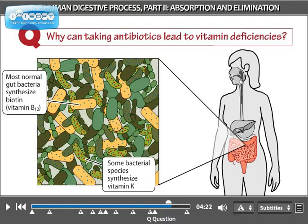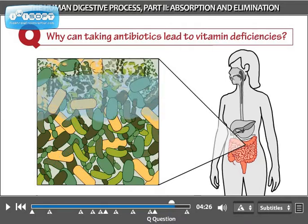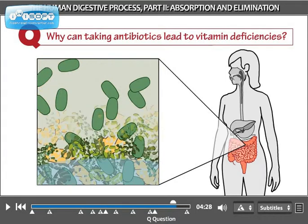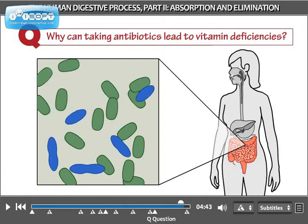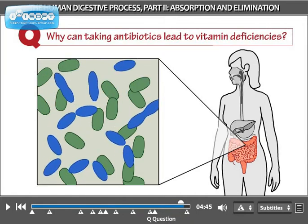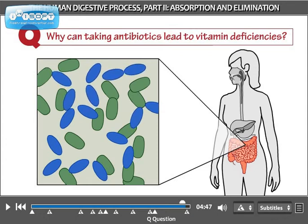Antibiotics frequently and unintentionally kill a large proportion of the colon bacteria in addition to whatever illness-causing microbe they were prescribed to kill. As a result, prolonged antibiotic treatment can lead to vitamin deficiencies. The disadvantage of using antibiotics is that the normal, beneficial bacteria are killed in the process, leaving nutrients and space available for a disease-causing bacterium to gain a foothold. Maintaining a robust population of benign bacteria is your first line of defense against infection by harmful bacteria.